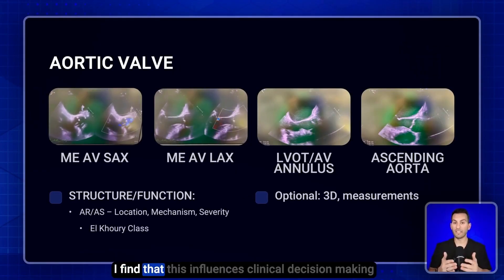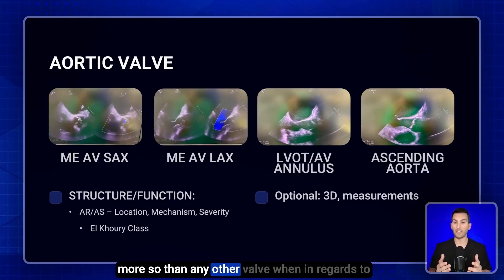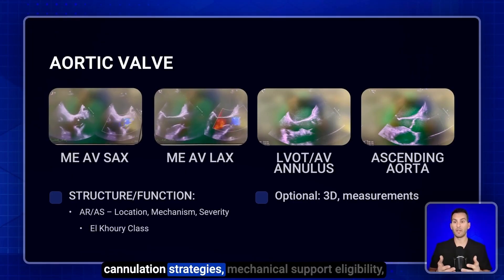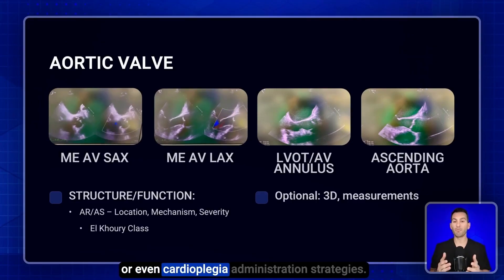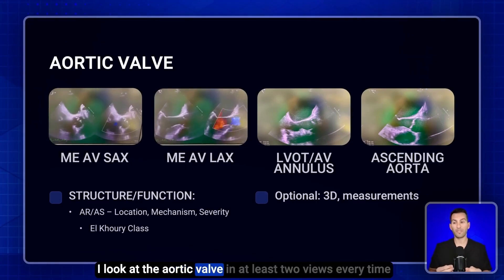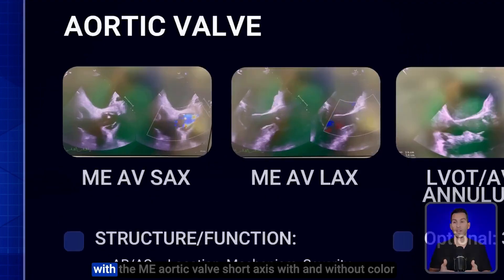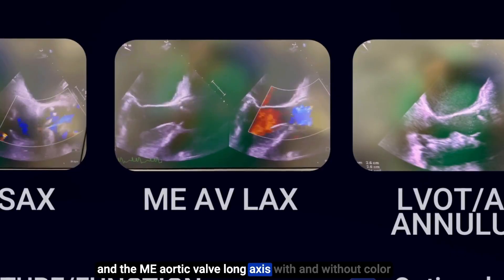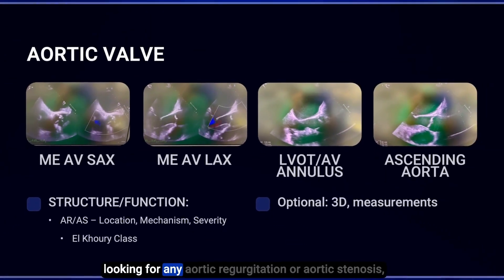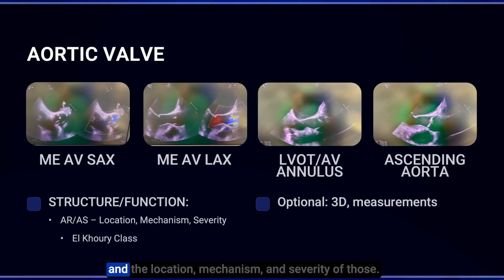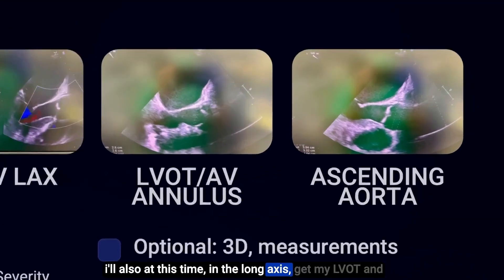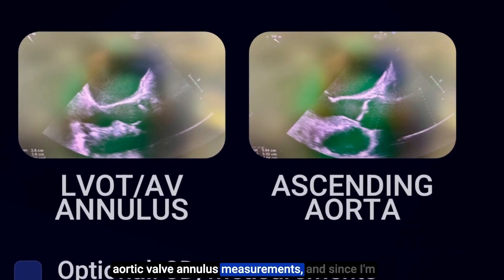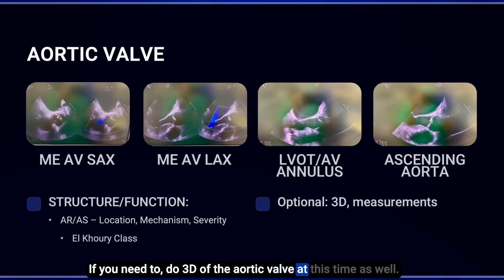Next, we'll look at the aortic valve. This influences clinical decision-making more than any other valve in regards to cannulation strategies, mechanical support eligibility, or cardioplegia administration strategies. I look at the aortic valve in at least two views every time: the midesophageal aortic valve short axis with and without color, and the midesophageal aortic valve long axis with and without color, looking for aortic regurgitation or aortic stenosis. I'll also get my LVOT and aortic valve annulus measurements and measure the ascending aorta at that time. If needed, do 3D of the aortic valve as well.